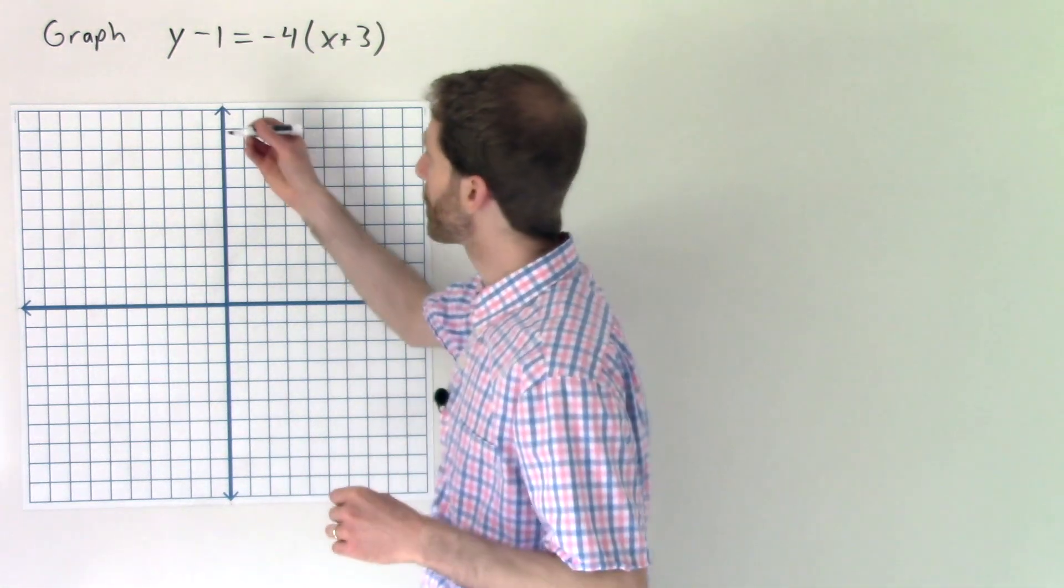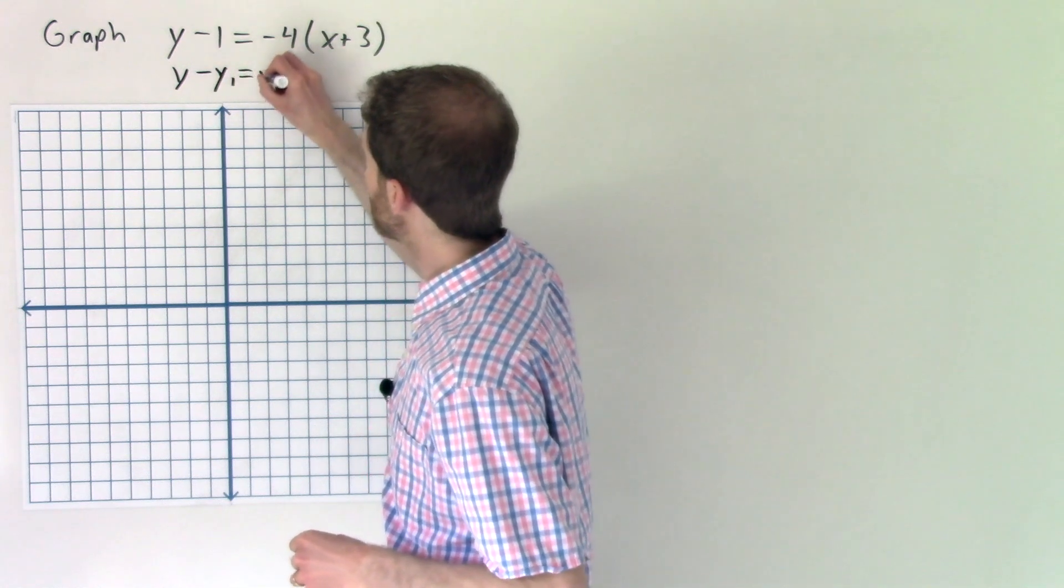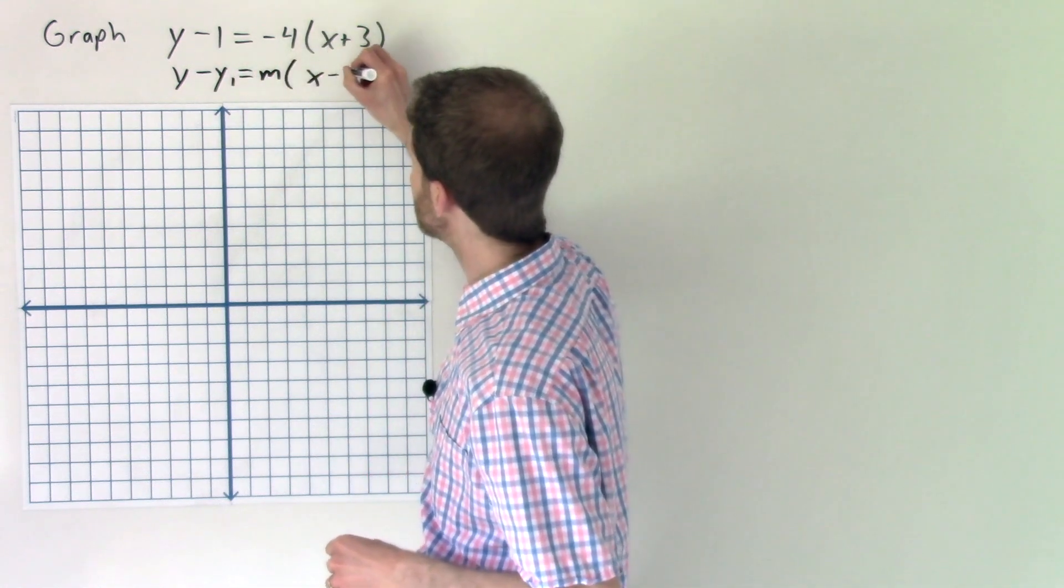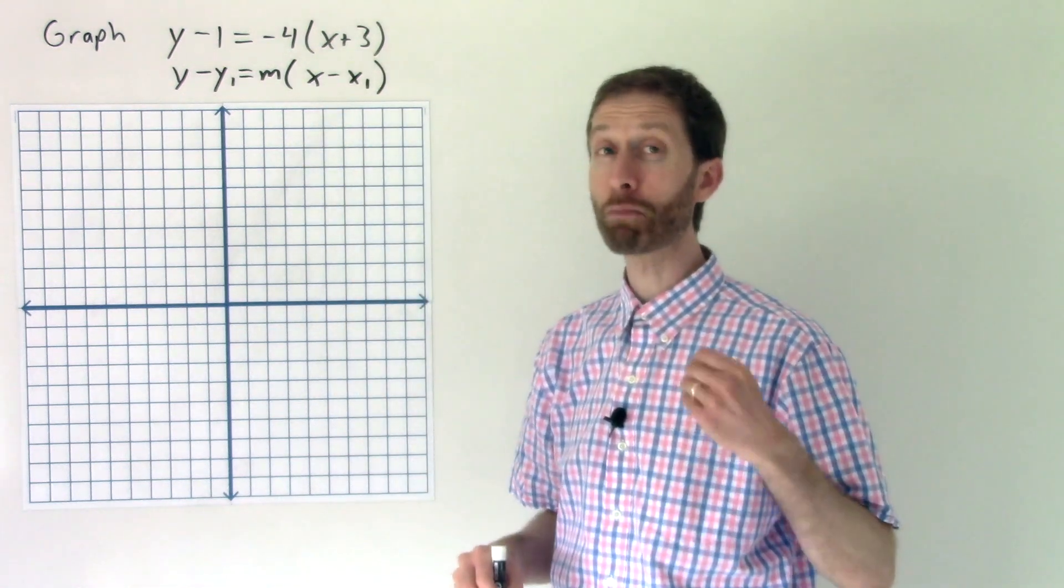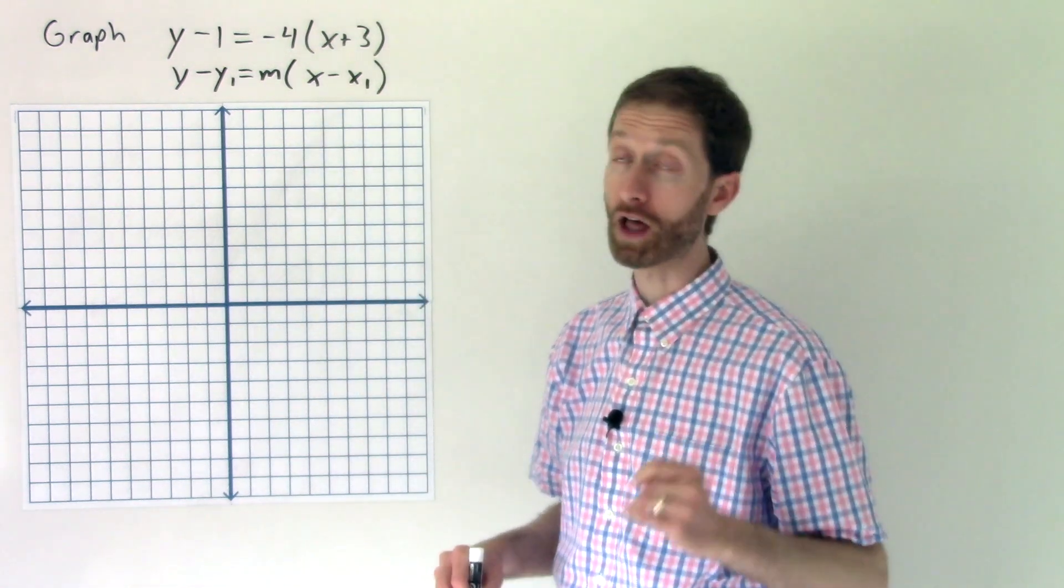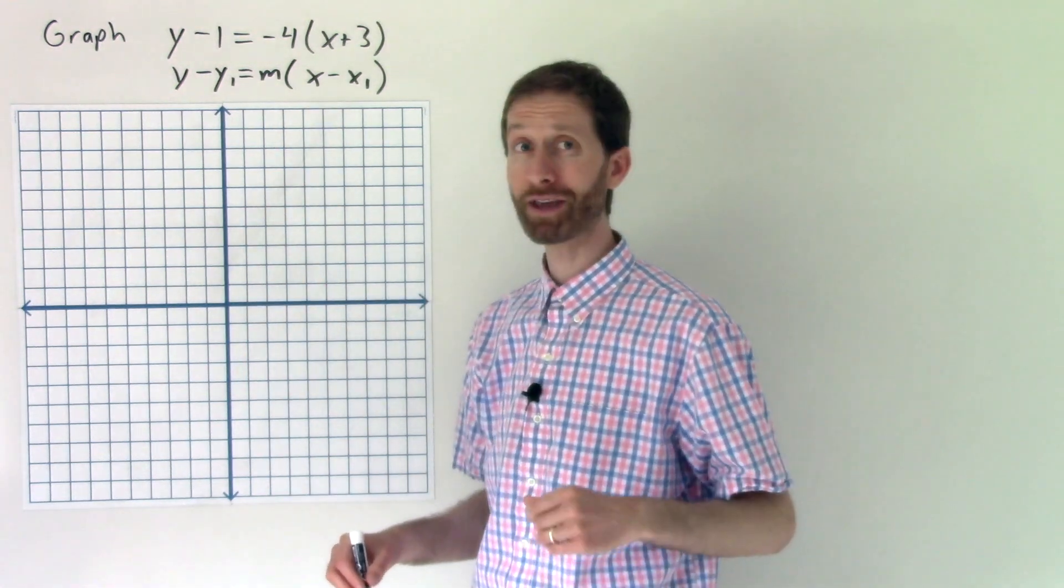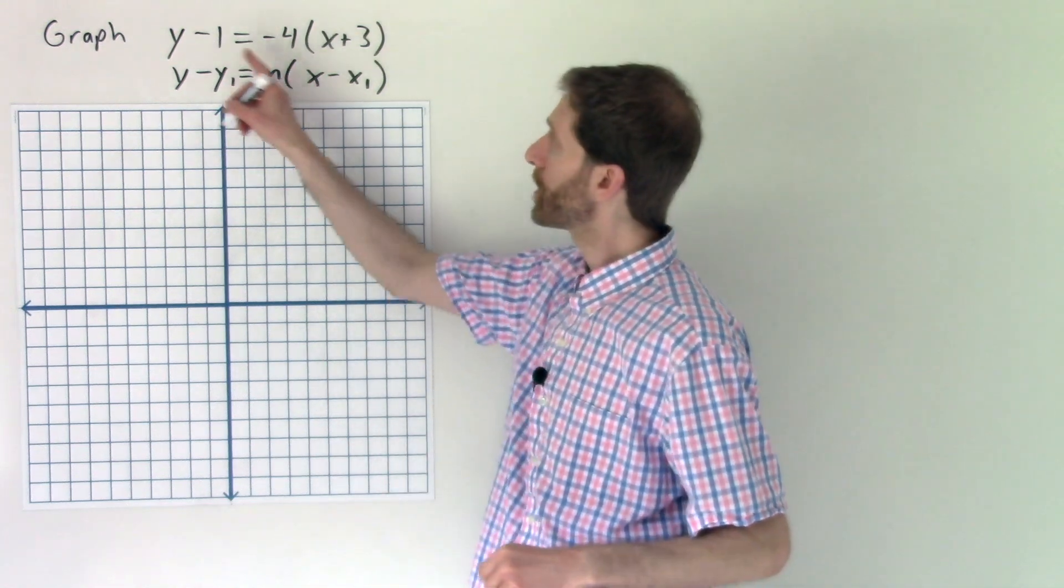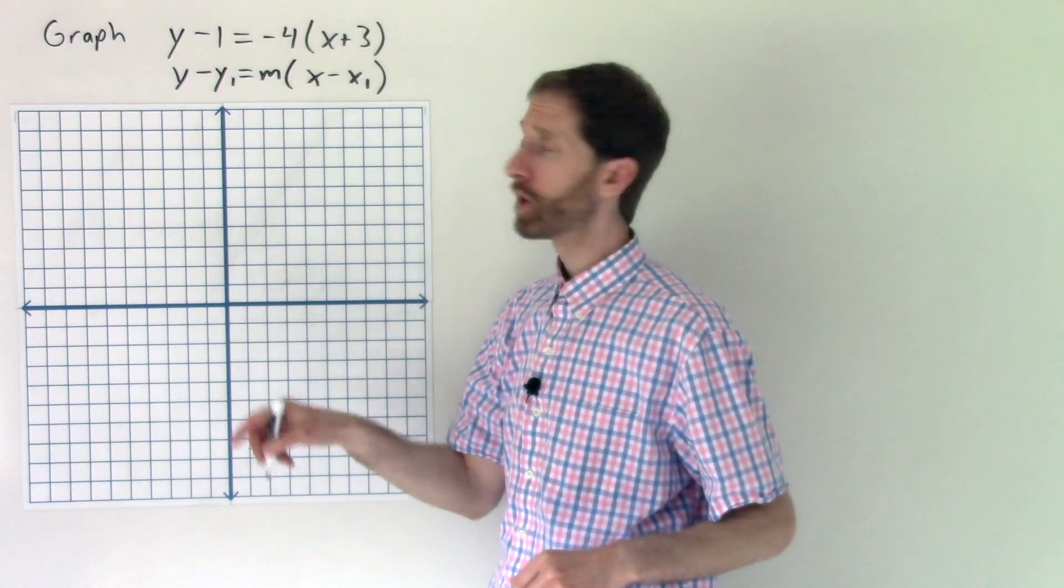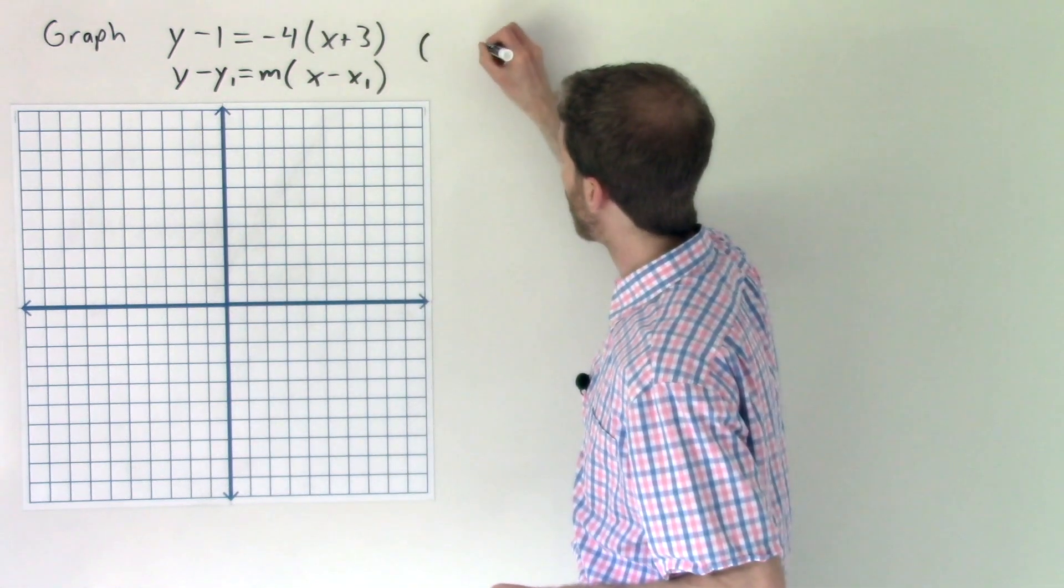So we should remember that point-slope form is y-y₁ equals m times x minus x₁, where x₁, y₁ is the point that we have fixed on the line, and m is the slope of how we move on that line. So actually, what we're given is exactly how we're going to move and graph. So we're told that we have this equation here. Well, we're given then the x and the y value of a point on this line.